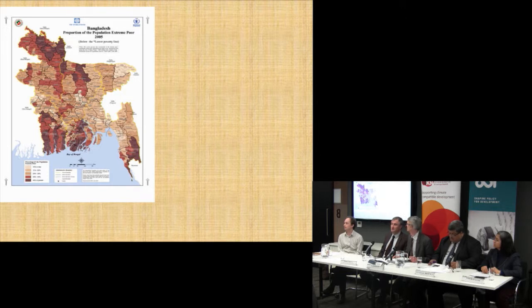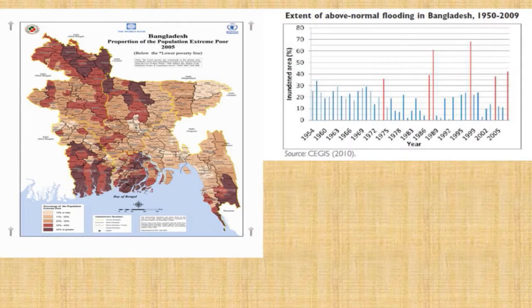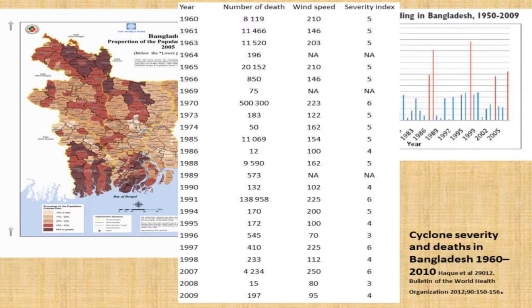Bangladesh is also highly vulnerable in terms of population. The diagram shows the percentages of the population in extreme poverty — the dark brown indicates over 45% poverty in various parts. Bangladesh has also seen changes in flooding over time. Above-normal flooding — a lovely understatement — shows that in 1998, up to 70% of the country was inundated. Imagine if that happened in the UK. Additionally, 500,000 people were killed by cyclones in Bangladesh in 1970 alone.